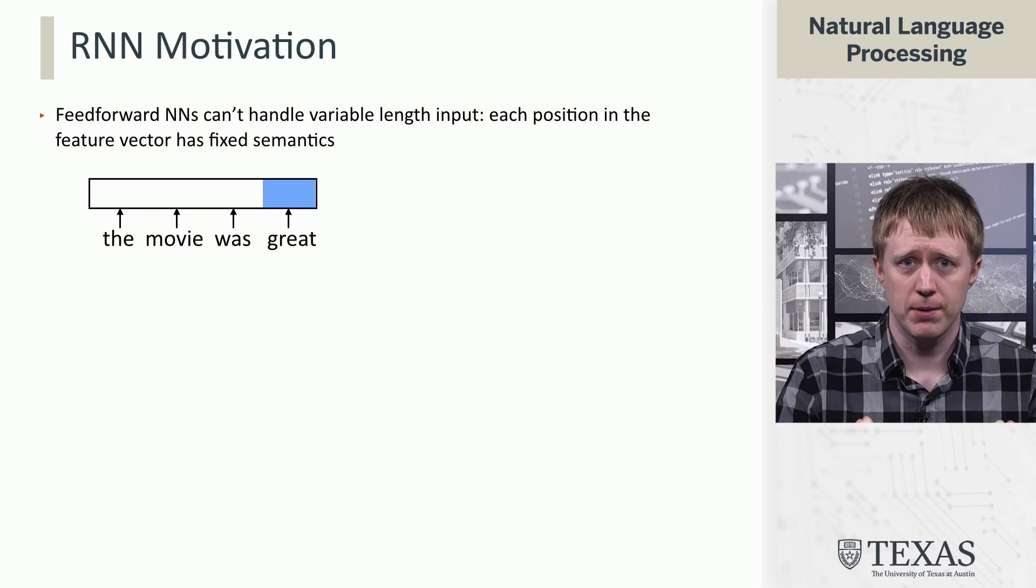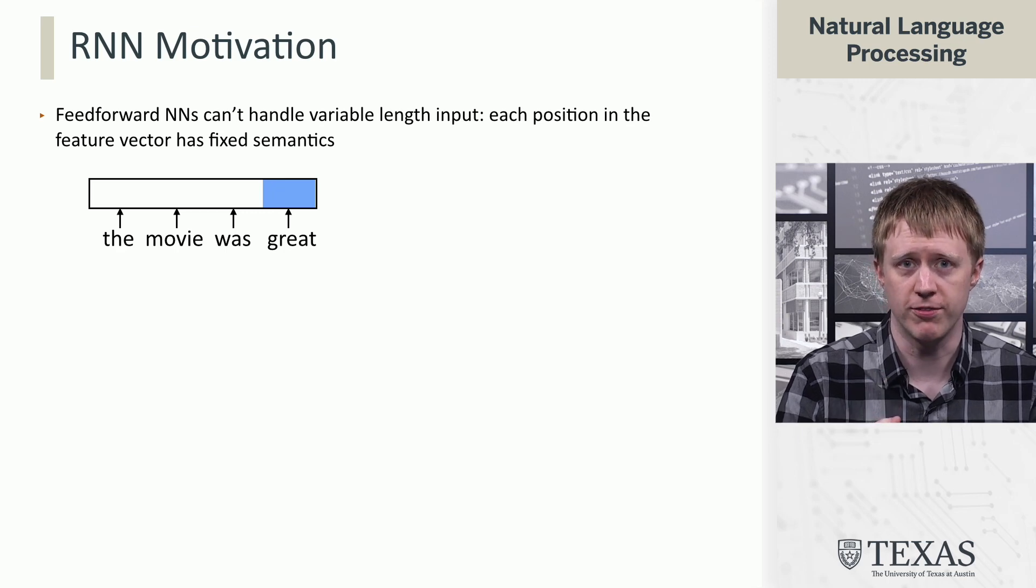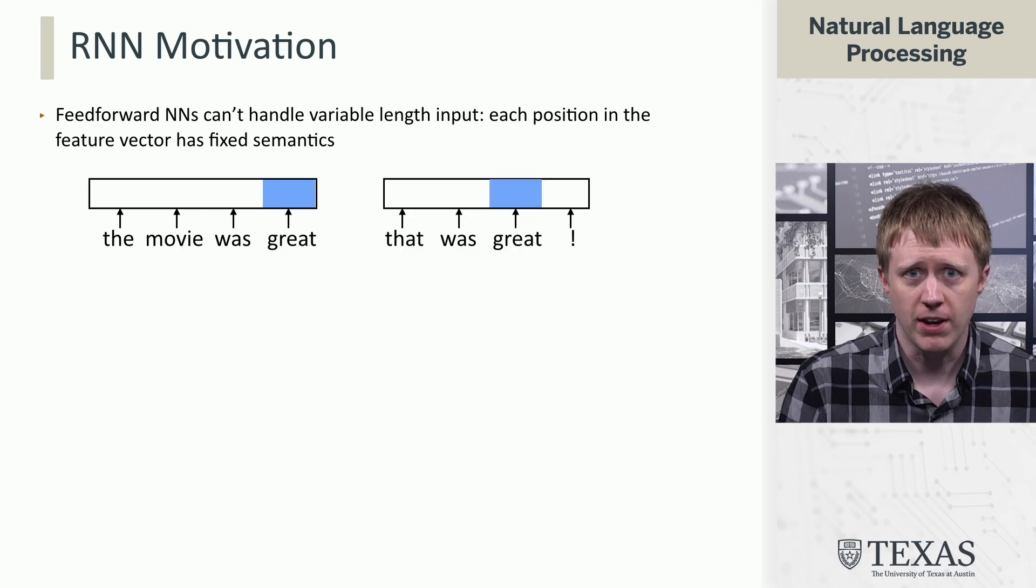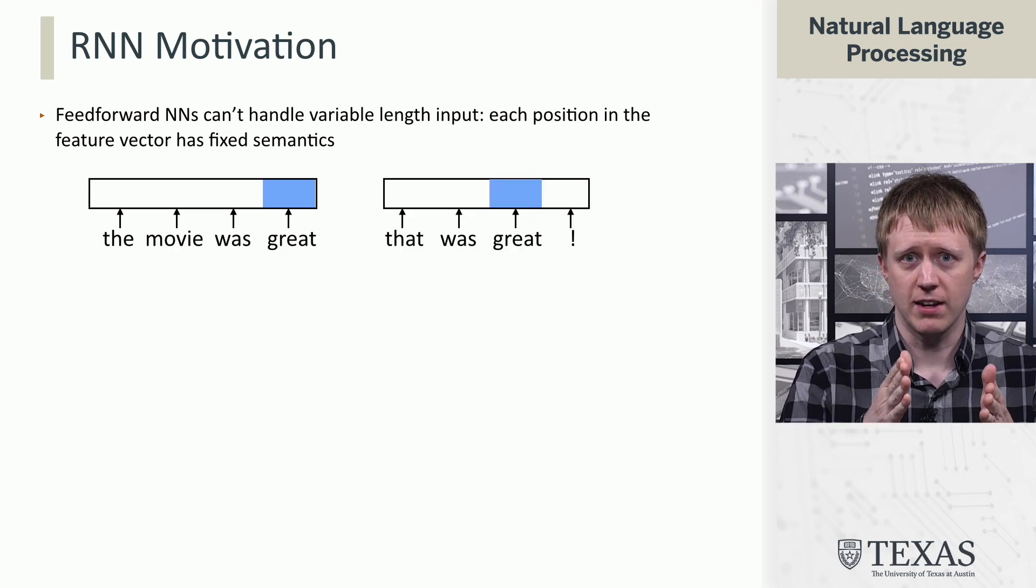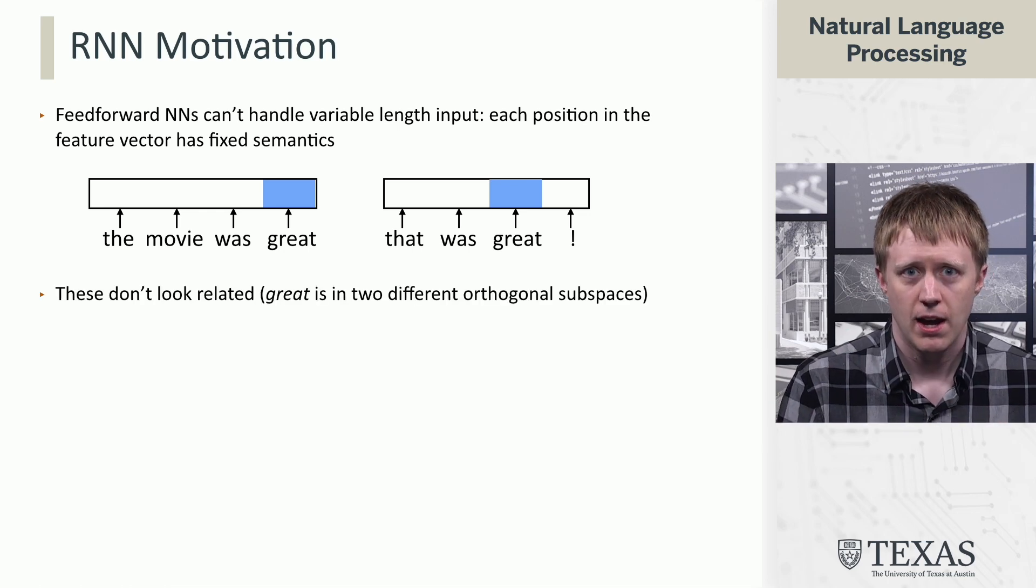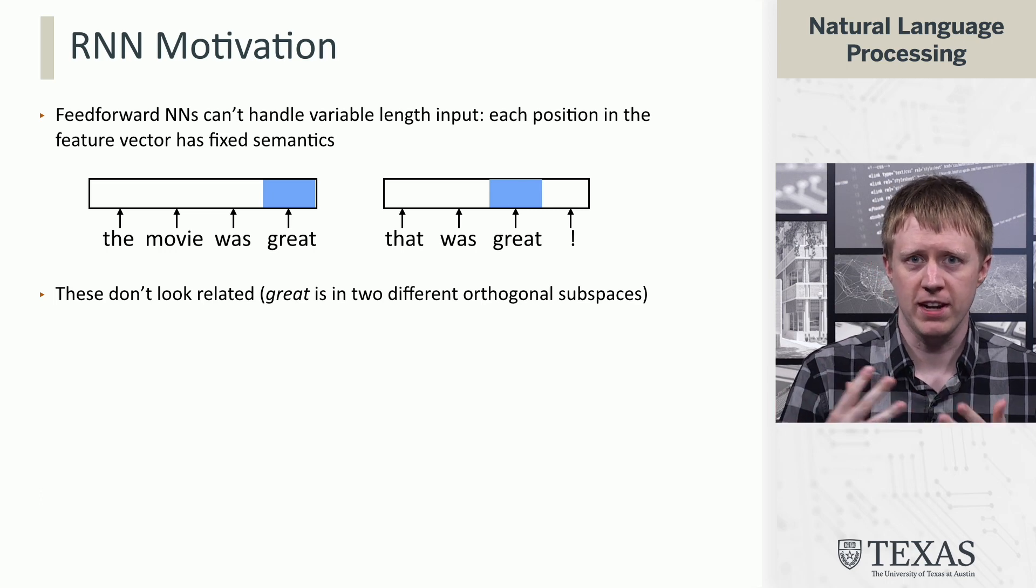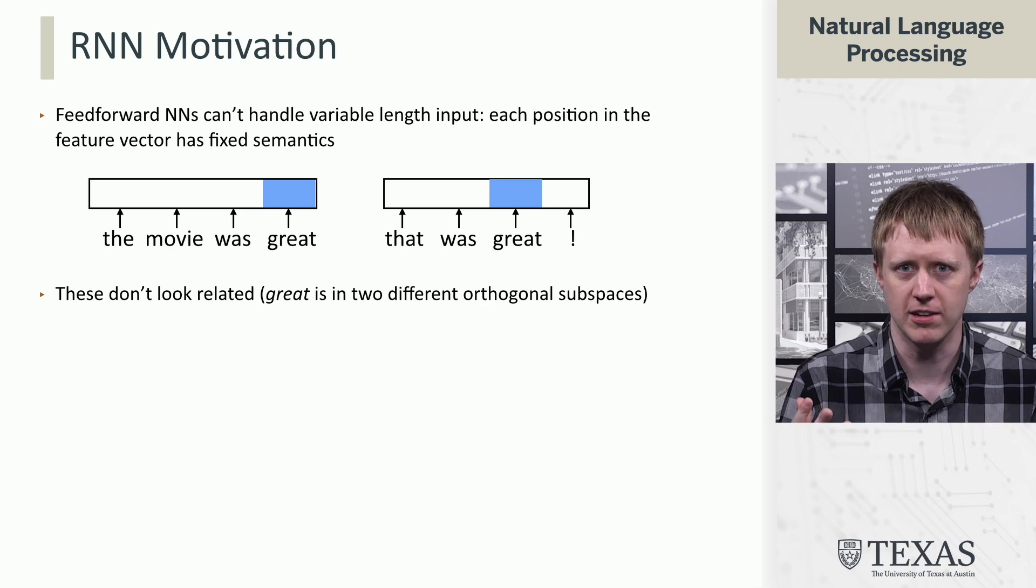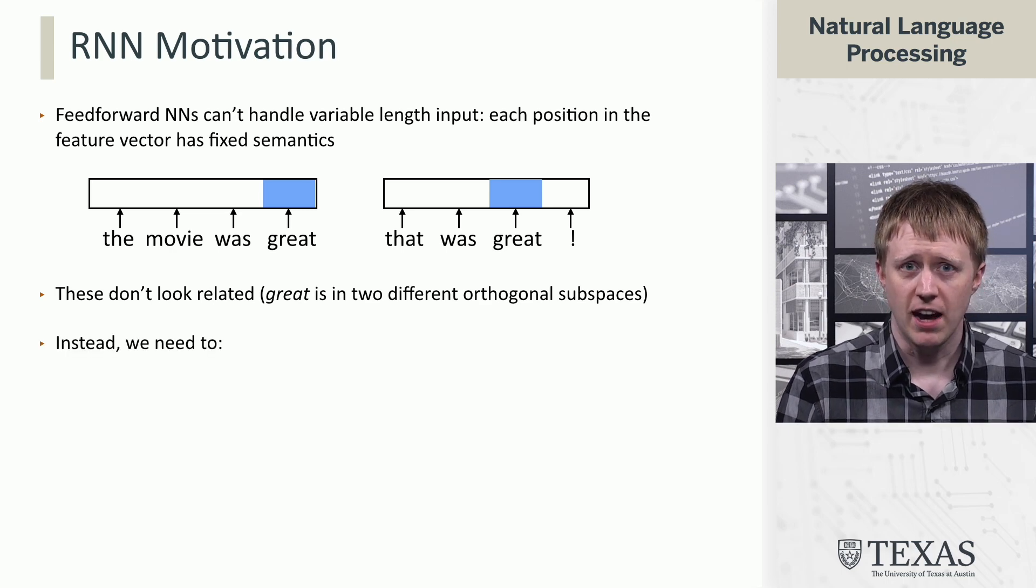Now, if we learn some parameters, there's going to be a certain set of parameters associated with position four in this vector that learn to model the fourth word. Then if I get a new sentence like 'that was great,' this 'great' is in a completely different position in the vector than the other 'great.' Technically, these are in orthogonal subspaces of the vector space, and so the model is not actually going to share any parameters related to these two usages of 'great.'